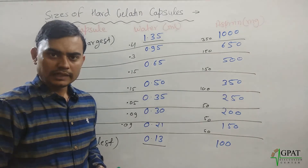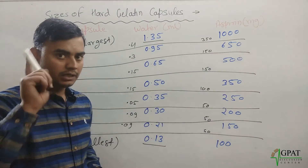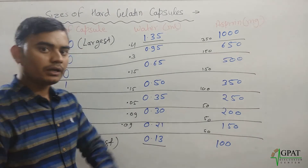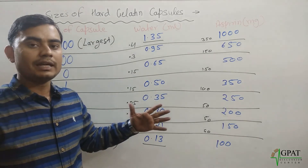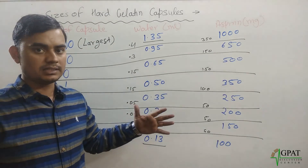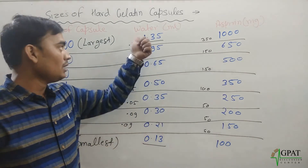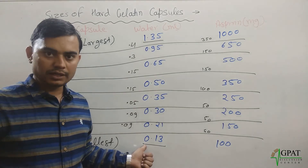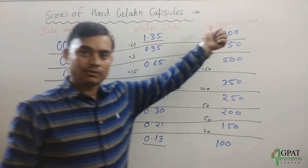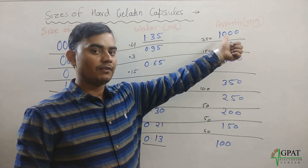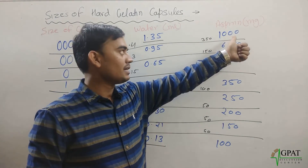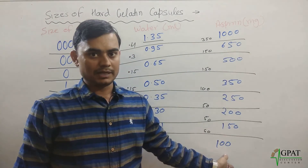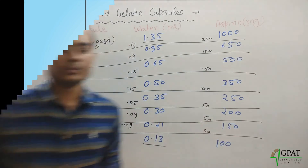There are two majorly important points. The maximum water amount that can be filled in the largest capsule (triple zero) is 1.35 ml, while in the smallest it is 0.13 ml. The maximum aspirin amount in the largest capsule is 1000 mg, while in the smallest it is 100 mg. Thank you.